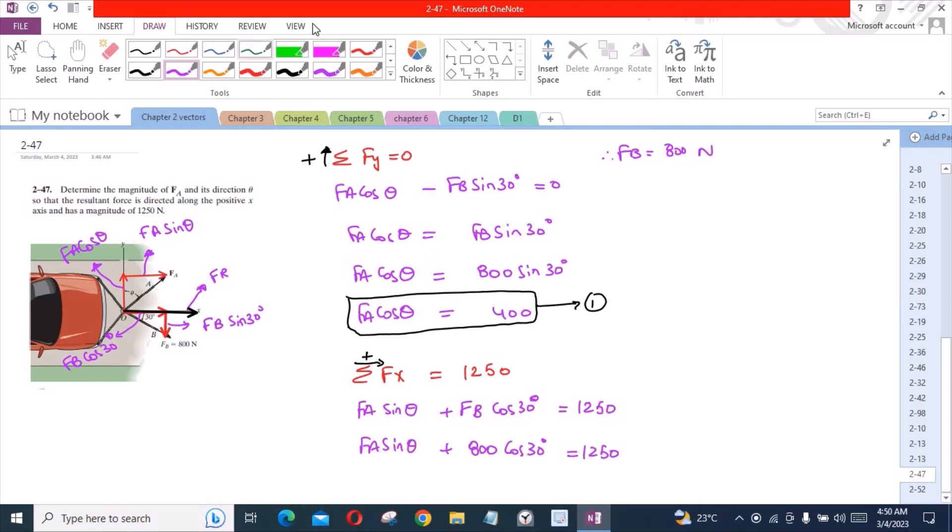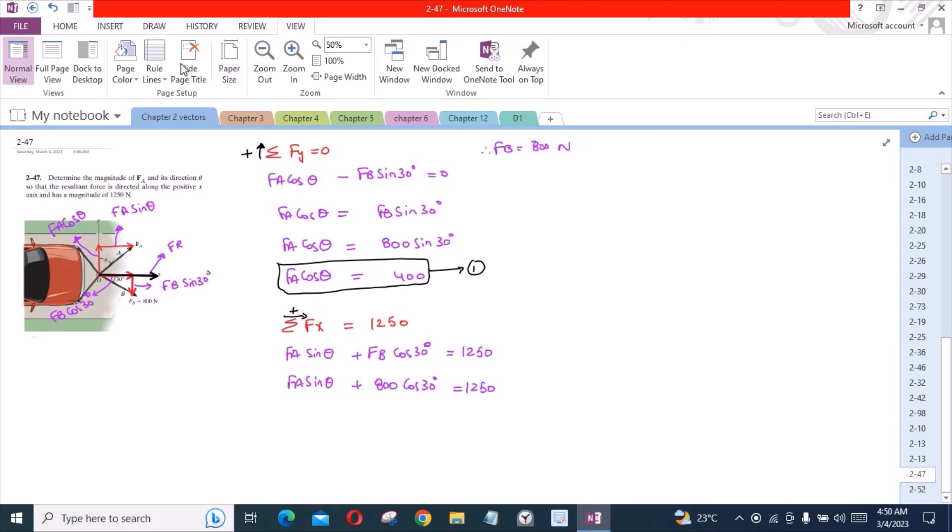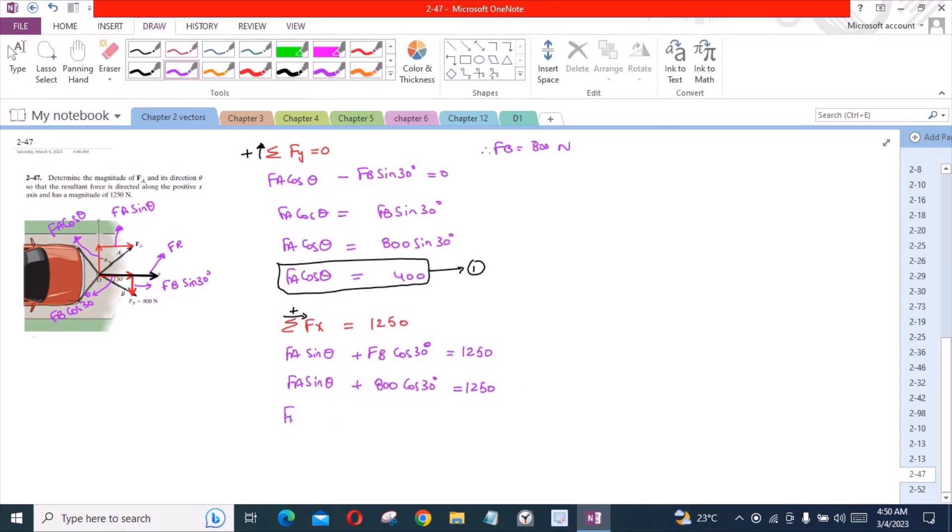So Fa sin theta plus 800 cos 30 degrees equals 1250. So from here we have Fa sin theta plus 692.82 equals 1250. So Fa sin theta equals 557.18. Let's call this equation 2.